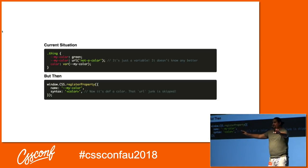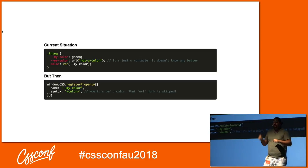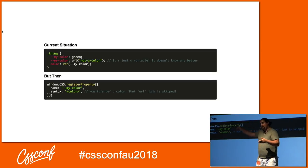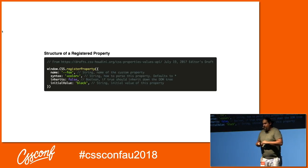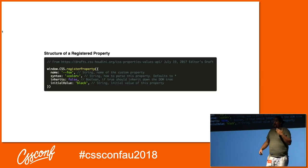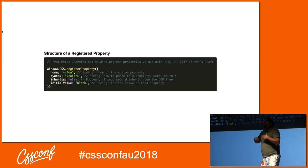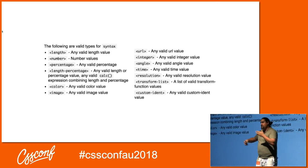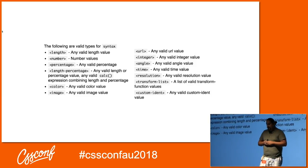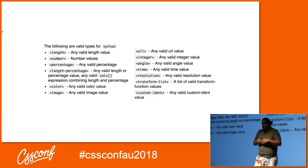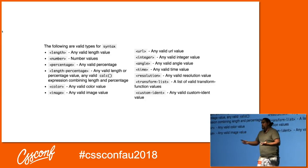But then, window.css.registerProperty. We're going to register the myColor property and call it a color — now it's definitely a color. The browser knows the type of this property is color, and we get all things we expect with colors, including validation that URL isn't valid. There are different things we can do with registerProperty: besides name and syntax, we can decide whether our custom property inherits up the DOM tree and give it an initial value. Syntax has lots of options: lengths, numbers, percentages, length-percentages like calc, colors, images, URLs, integers, angles, time, resolution, transform lists, and custom items.